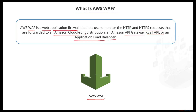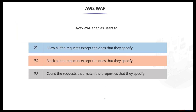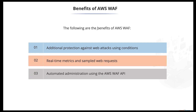WAF allows users to define rules to allow all requests except the ones specified, or to block all requests except the ones specified. For example, we can block requests from a specific country or containing a specific path, while allowing everything else. We can also count the number of requests that match specified properties as part of a monitoring activity. If the number of requests surpasses a given threshold, that can be marked as a trigger to be monitored.